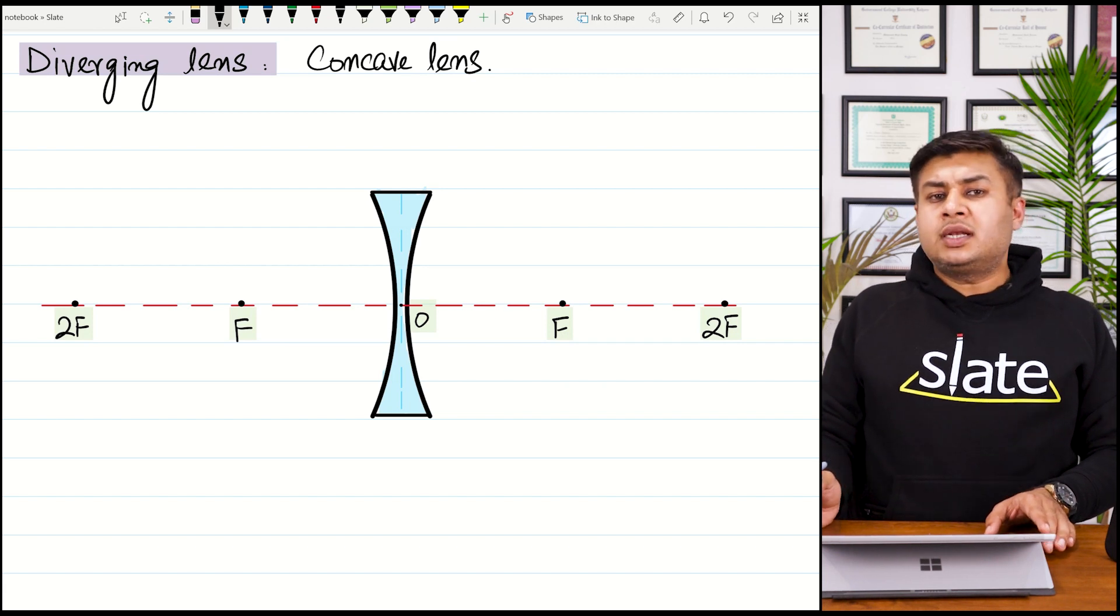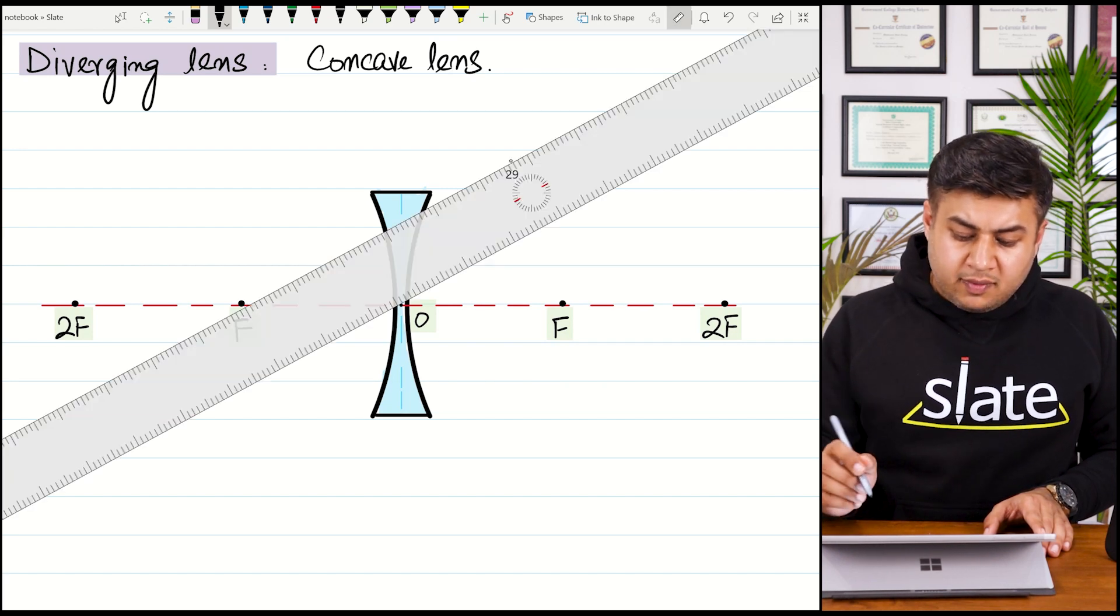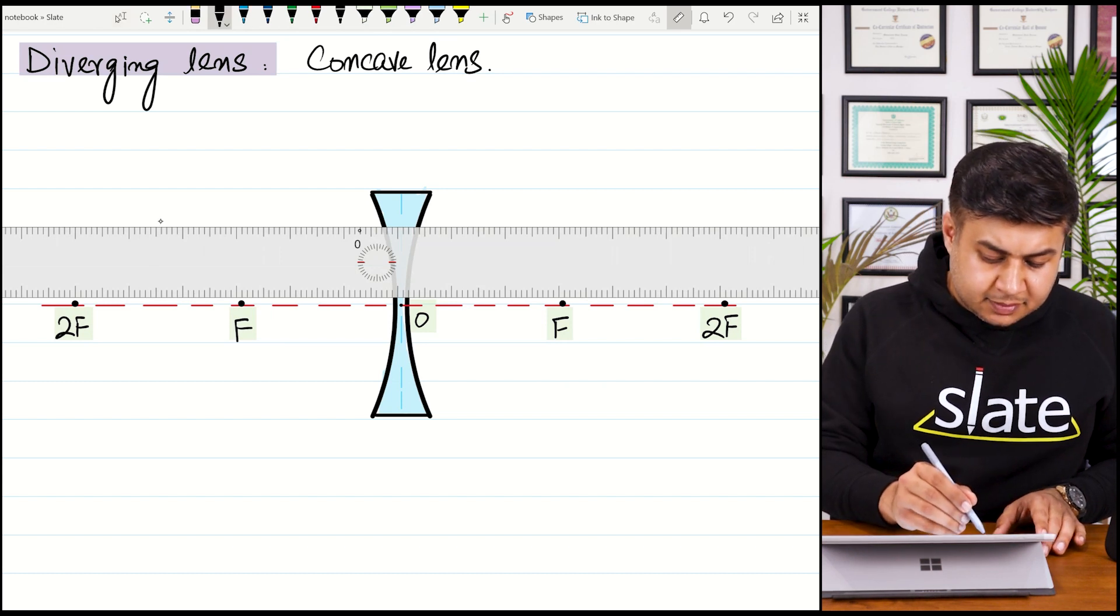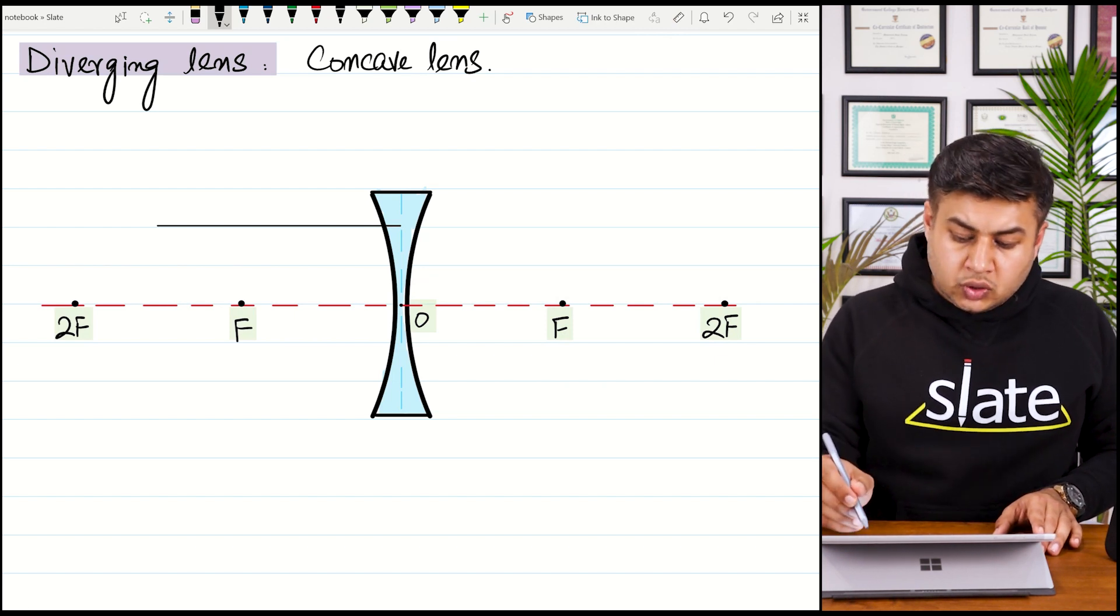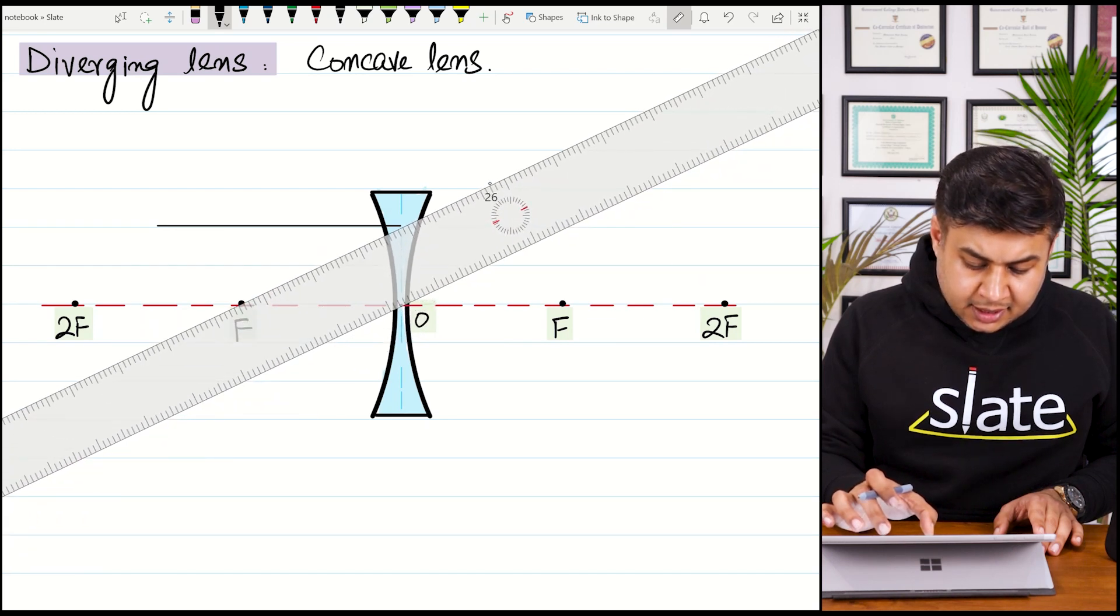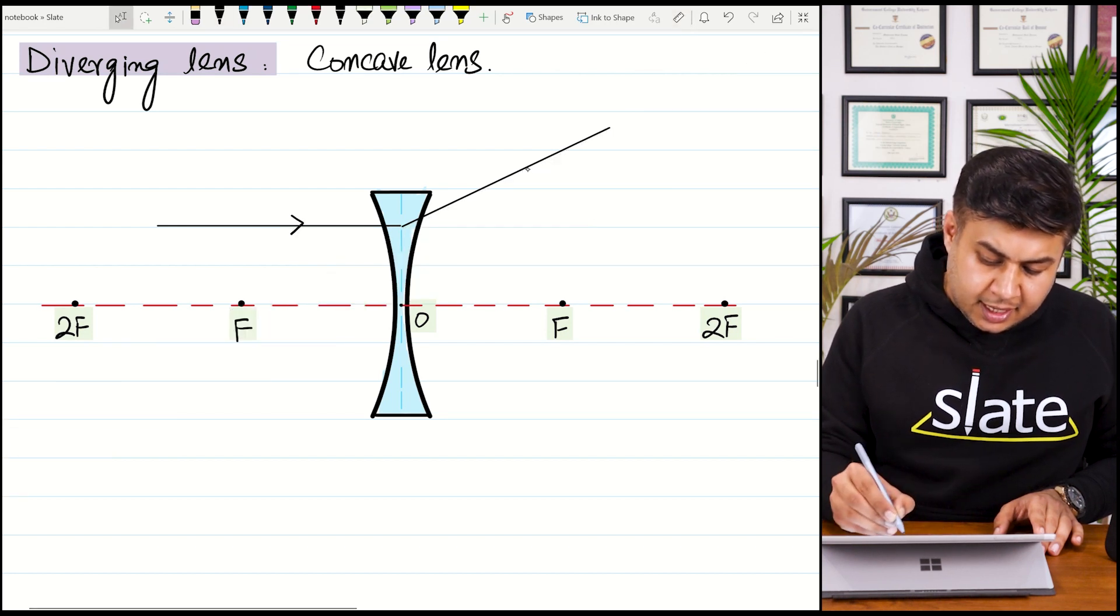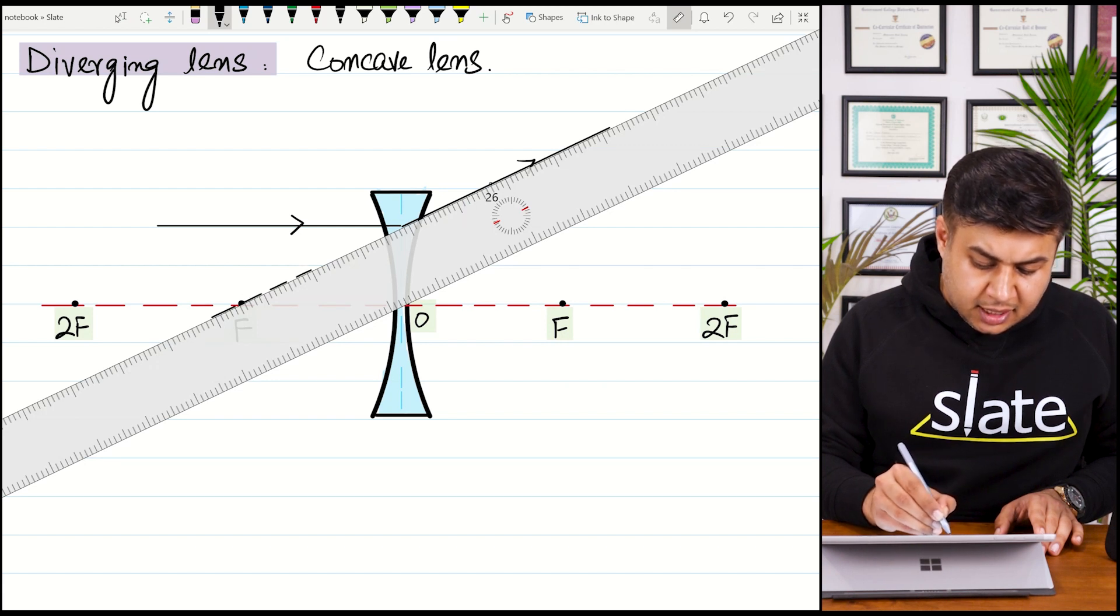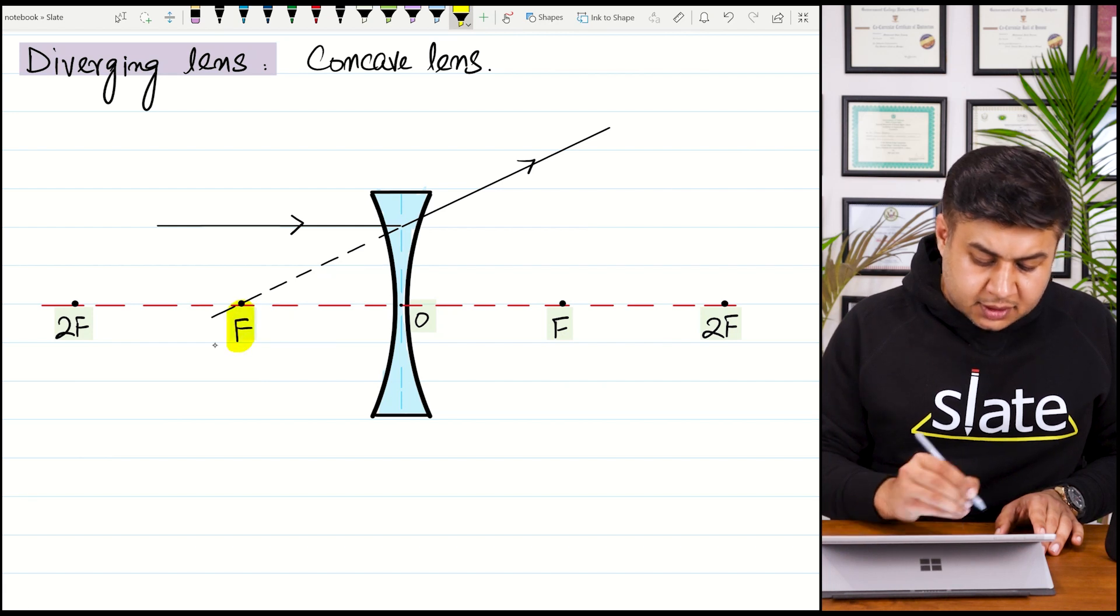It is thin from the center and thick from the edges. What were the rules of ray diagram for the concave lens? We will recall that if the ray of light is coming parallel to the principal axis, it will diverge and go away from the center. It will diverge in a way such that when it is stretched back inside the lens,